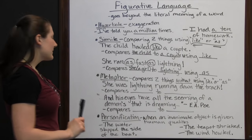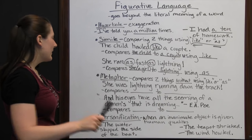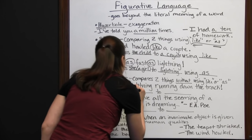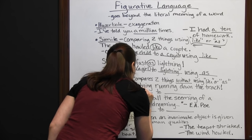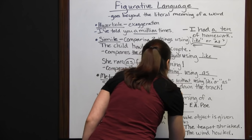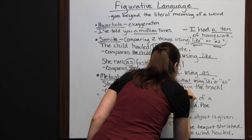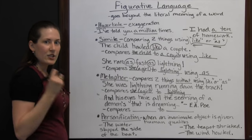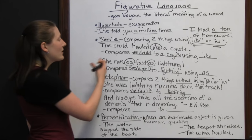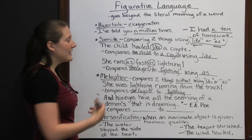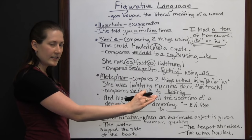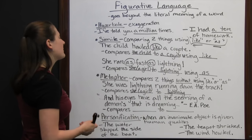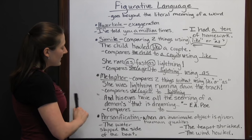"She was lightning running down the track." This sentence is very similar to the simile — both compare a girl to lightning and say she is really fast. But this one just says "she was lightning" without using "like" or "as." It's a different way to use the same kind of figurative language, and that's one example of a metaphor.